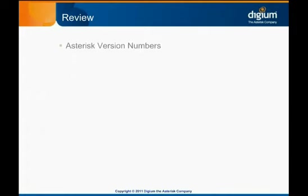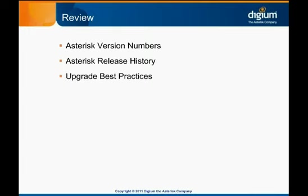At this point, you should understand how Asterisk version numbers are defined and what they mean. You've also seen some of the Asterisk release history, and you know that Asterisk 1.8 is the current release family and is what you should probably be running. The best practices offered in this module might help you through the upgrade process. We'll now move on to look at several of the ways Asterisk is commonly used in a module dedicated to Asterisk use cases.